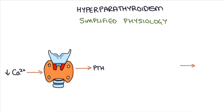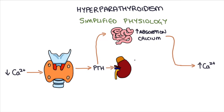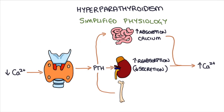Parathyroid hormone acts to raise blood calcium level by increasing the absorption of calcium from the intestines, increasing the reabsorption of calcium in the kidneys — basically reducing how much is secreted in the urine — and increasing the osteoclast activity in the bones. Remember that the osteoclasts are responsible for breaking down the bones and releasing calcium into the blood.